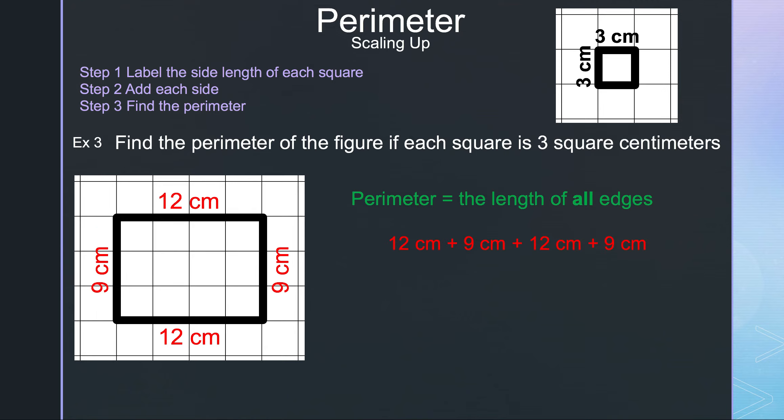Now we can add these together. 12 plus 9 is 21, 21 plus 12 is 33, and 33 plus 9 is 42. So the perimeter of this figure is 42 centimeters.